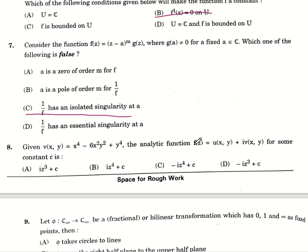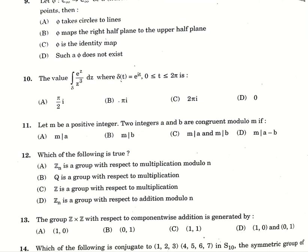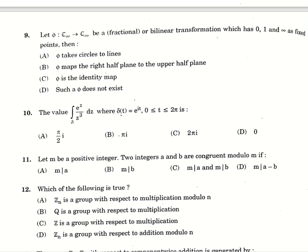Eighth question, V of x, y equals x power 4 minus 6 x square y square plus y power 4. Analytic function f of z equals u x, y plus i v x, y for some constant C is option number C, minus i z power 4 plus C. Ninth question, a bilinear transformation is given which has 0, 1 and infinity as fixed points. Option number A, 5 takes circles to lines. Tenth question, the value of the integral e power z by z cube dz where delta t is e power i t and t lies between 0 and 2 pi. Option is option number C, 2 pi i.